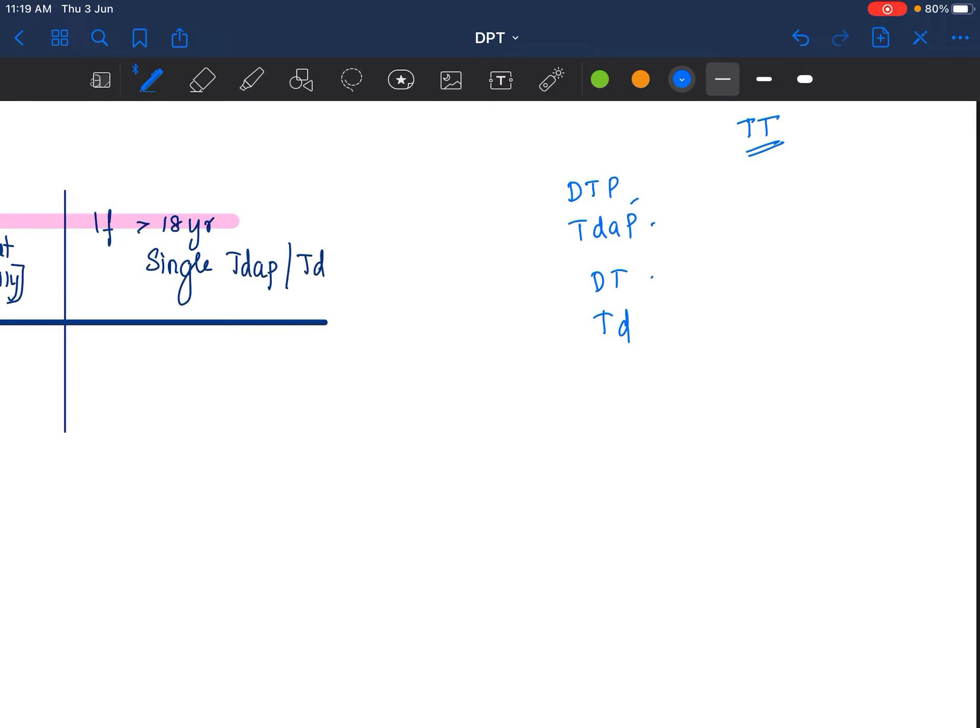So, some of the brand names like Adacel, your Boostrix, all of this contains 20 international units.